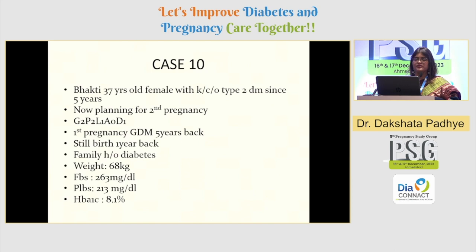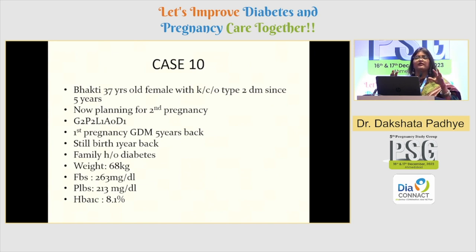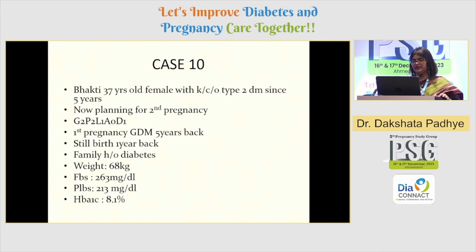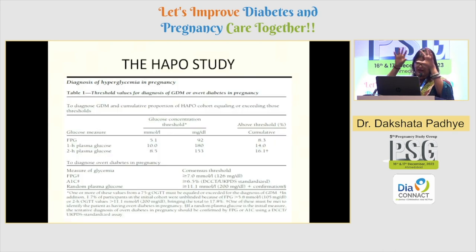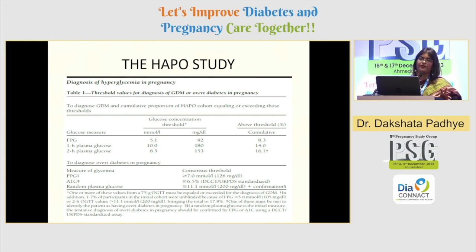One very interesting case: she had her first normal baby and was GDM. The second time she didn't plan — she had IUFD at 9 months. She's clearly diabetes in pregnancy. We really need to classify these patients because she's coming to us after one IUFD with fasting 263, post-meal 239, HbA1c 8.1. That is the reason we really need to plan and classify at the time of pregnancy. Your OGTT is very, very important, as is HbA1c simultaneously. Along with classification, doing all these things are very, very important.